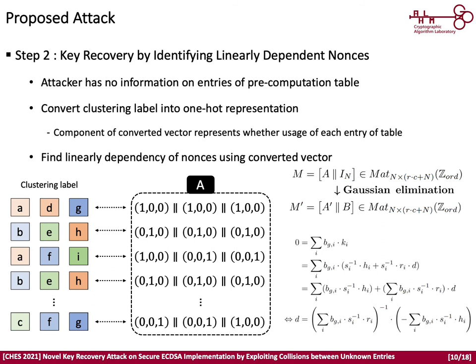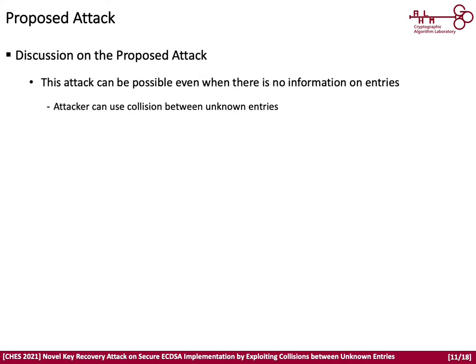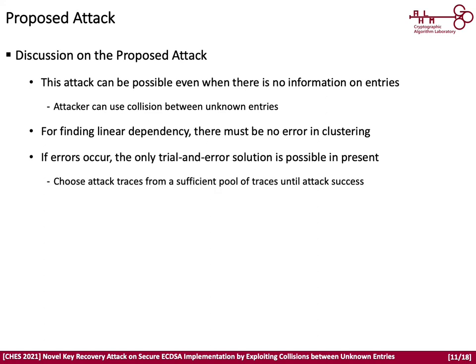Furthermore, if the attacker finds the basis of the converted vector space, all table entries can be found without index information. As mentioned, this attack can succeed even when there is no information on entries, by exploiting only collisions between side-channel leakages. However, there are some limitations: for finding linear dependency, collision information must have no errors. If errors occur, the attacker cannot find a meaningful linear dependency. If errors are possible, the only current solution is a trial-and-error process with a sufficient flow of traces until success.